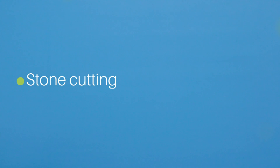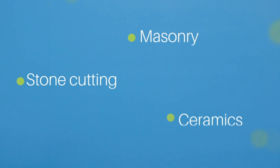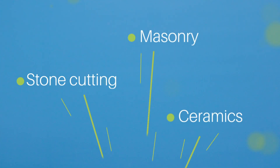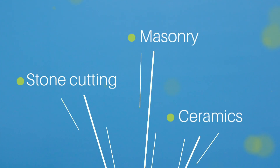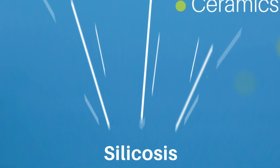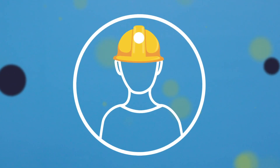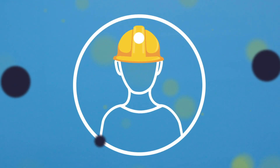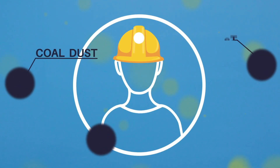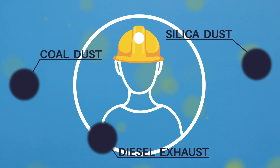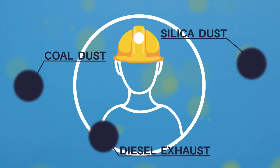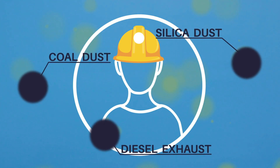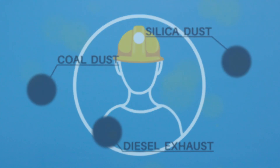Stone cutting, masonry, and ceramics are some of the occupations at risk for development of silicosis. Coal workers are exposed to multiple elements including coal dust, silica dust, and diesel exhaust.